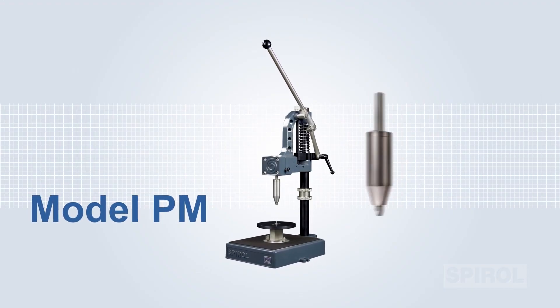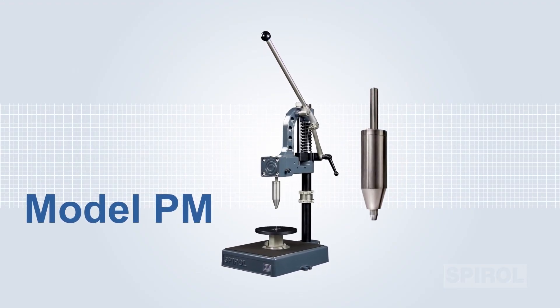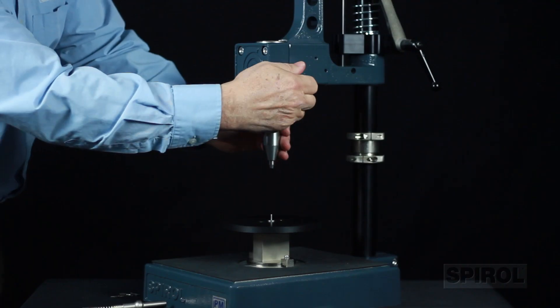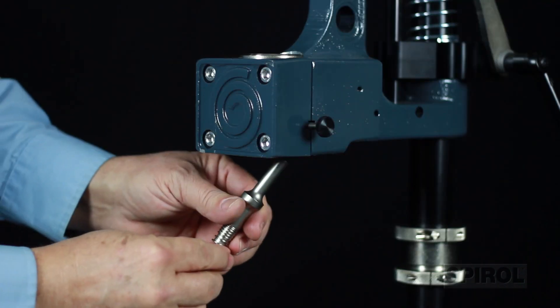The machine as purchased includes tooling to install one size and type of fastener. Additional tooling is readily available, allowing you to easily change fastener type and size as needed.